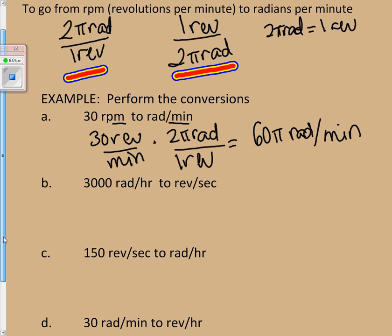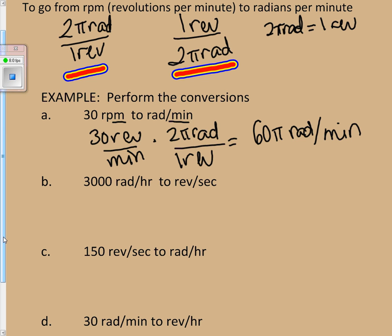So, let's take a look at our part B. On part B, we're going from radians to revolutions, so we're going to be using the second unity fraction, and I need to convert my hours into seconds.